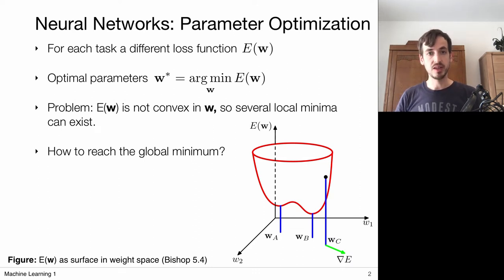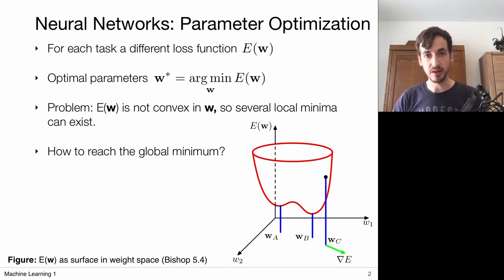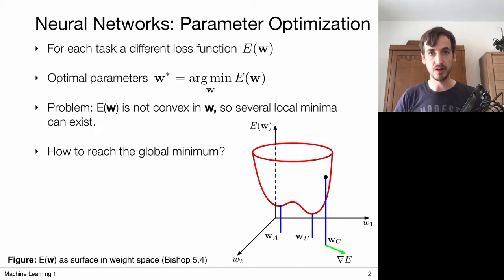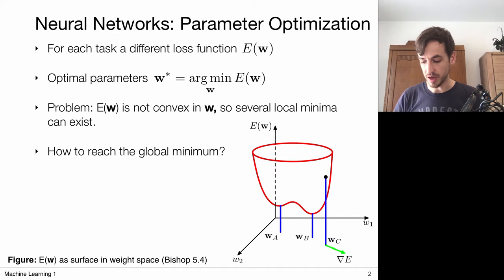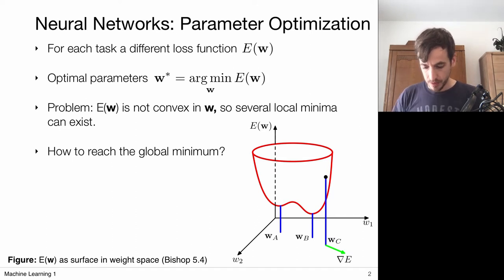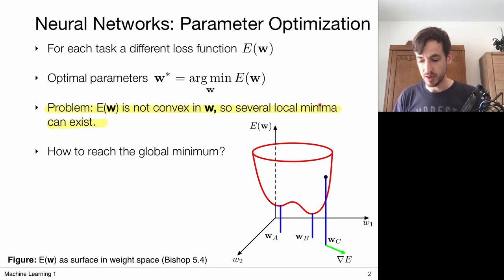So how do we reach this global minimum? The short answer is we can't — there's no way we can guarantee that we will end up at a global minimum. But we can try to avoid local minima as much as possible, and we are going to do this via stochastic gradient descent. The challenge here is that we are dealing with an error function which is not convex, so we have to deal with local minima.